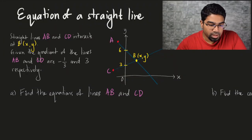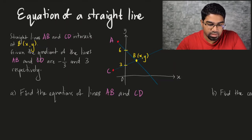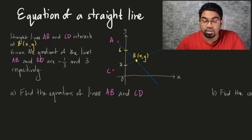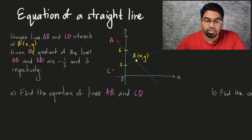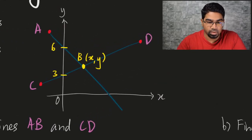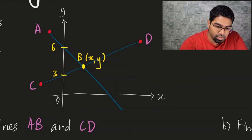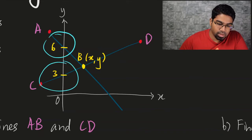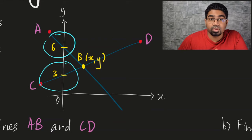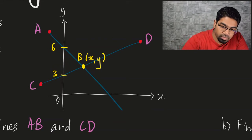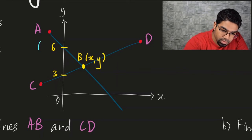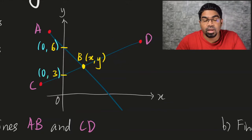Let's look at the question. Straight lines AB and CD intersect at B, as you can see from the graph. The gradients of lines AB and CD are negative 1 over 3 and 3 respectively. We need to find the equations of lines AB and CD. Before we attempt the question, let's study the graph and see everything that is given to us. We have two gradients, but we also have two points. Here they are labeled as intercepts, but it's more useful to label them as points. So we have (0, 6) and (0, 3) — for y-intercepts, the x-coordinate is 0.